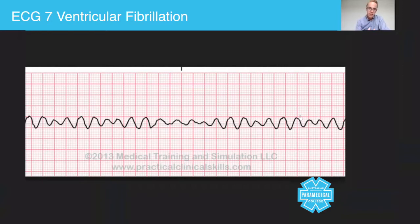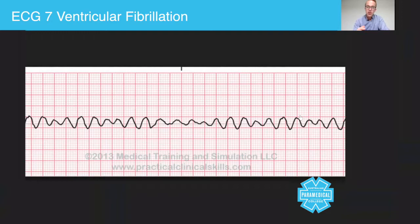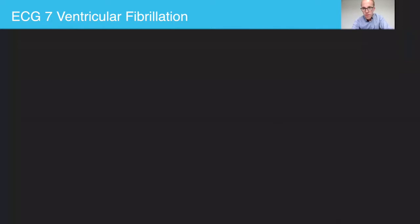The reason this is VF is because it's chaotic — it's described as chaos — and there's no pattern to it. When you look at this you should automatically be thinking 'that's VF, we need to shock that, we need to charge the defibrillator and shock it.'